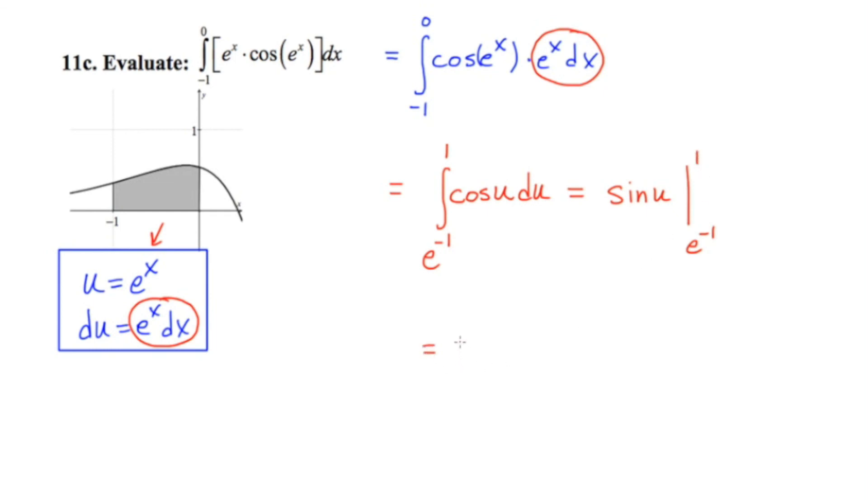So first I'll substitute in one, getting me sine one minus sine of e to the negative one. And this is going to give me the area under the curve, reminding you that we have to be in radians for this.